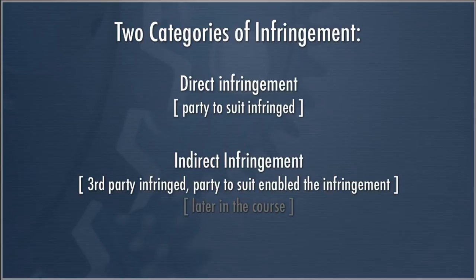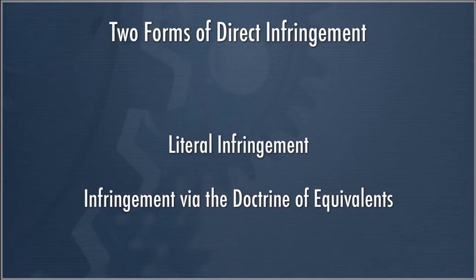For now, we're going to focus on direct infringement — the classic case where I own a patent and I think you, through the manufacture of your product or the provision of a particular service, have infringed my patent. There are two forms of direct infringement: one is literal infringement, and the second is infringement via the doctrine of equivalence, which we're going to spend most of the next few classes on.